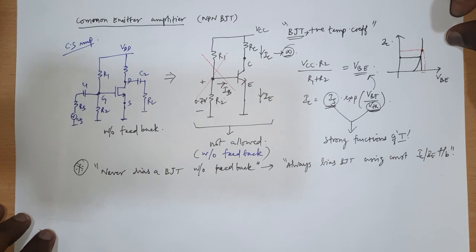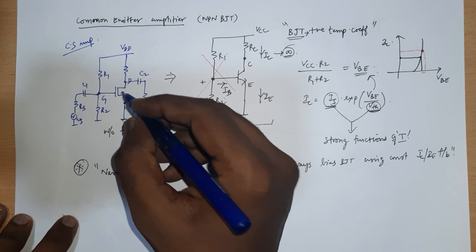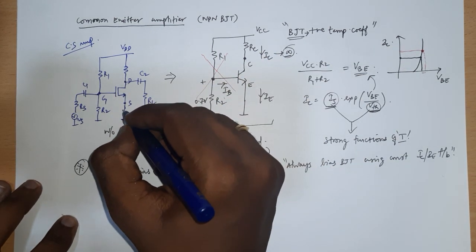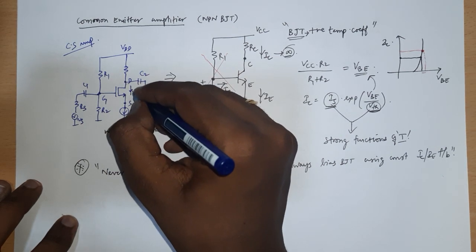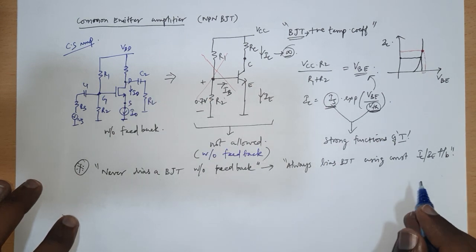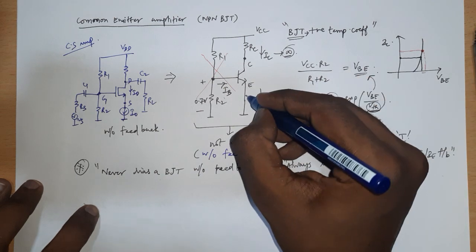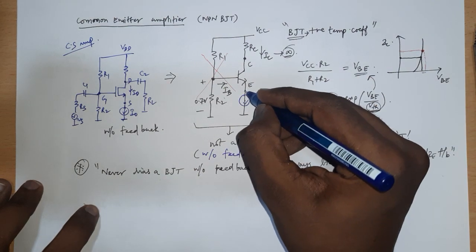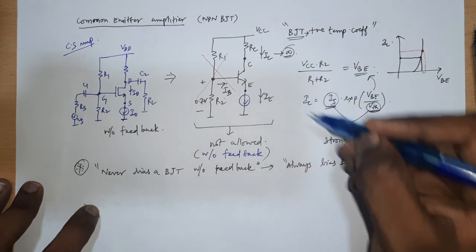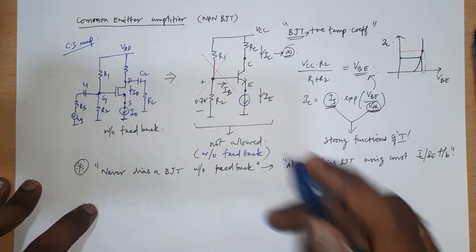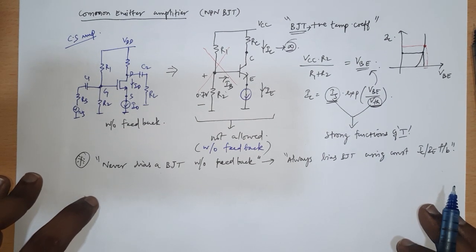With feedback, you sense at the source and feed it back to the source — that's what we did first. You sense at the source using a current I0, then compare the current ID; these two should be the same, so feedback is internal to the source. Similarly, to establish feedback here, you connect a current, sense at the emitter, and feed it back to the emitter — this is called emitter feedback. This is what we call a common emitter amplifier with emitter feedback.